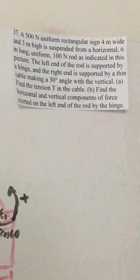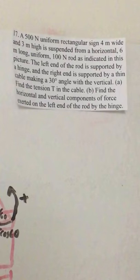Part A: find the tension T in the cable. Part B: find the horizontal and vertical components of force exerted on the left end of the rod by the hinge.